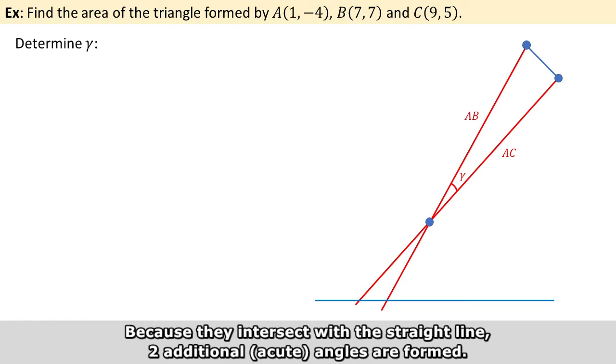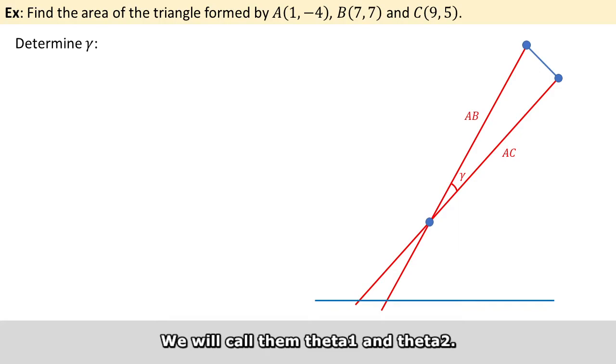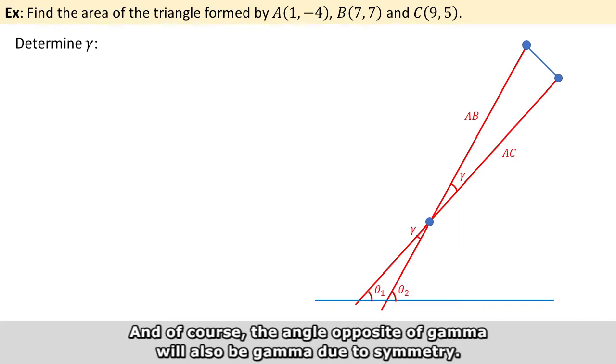Because they intersect with the straight line, two additional angles are formed. We will call them theta 1 and theta 2. And of course, the angle opposite to gamma will also be gamma due to symmetry.